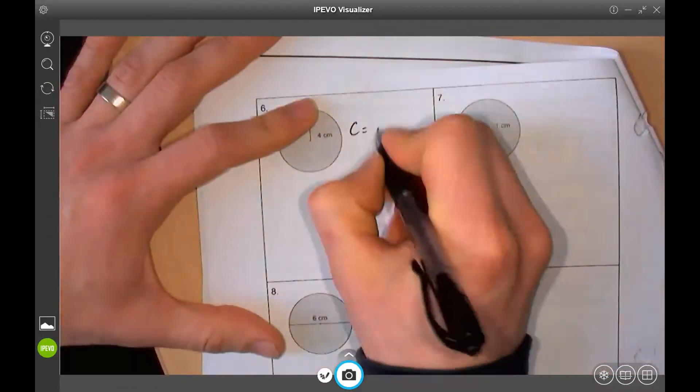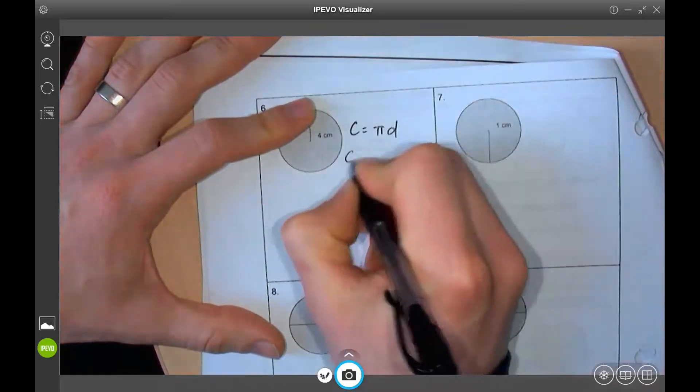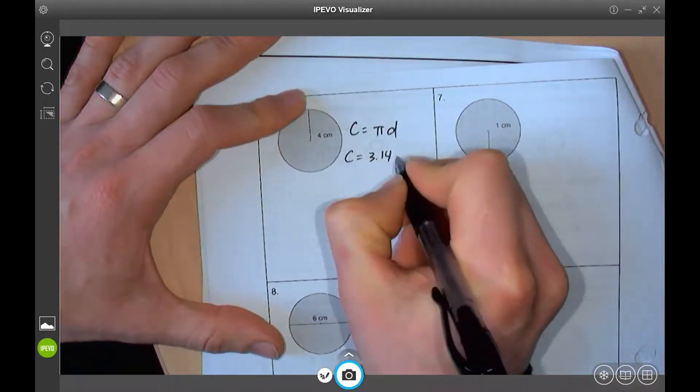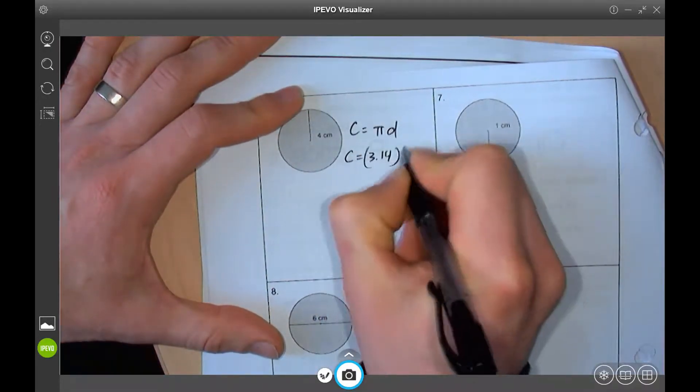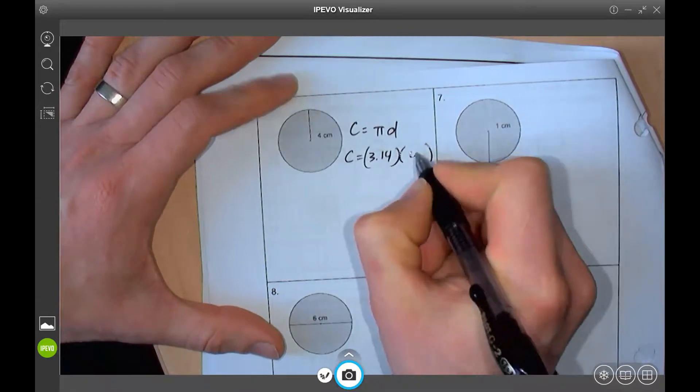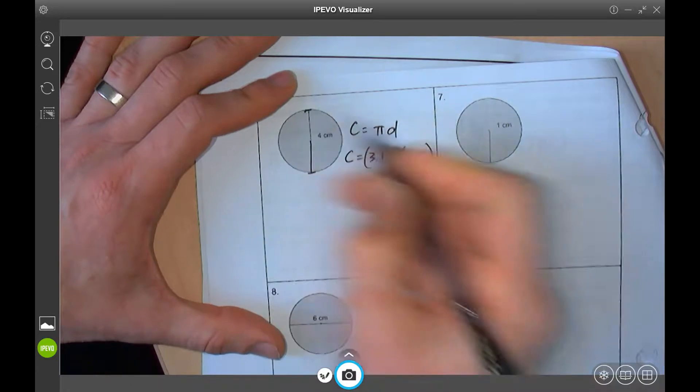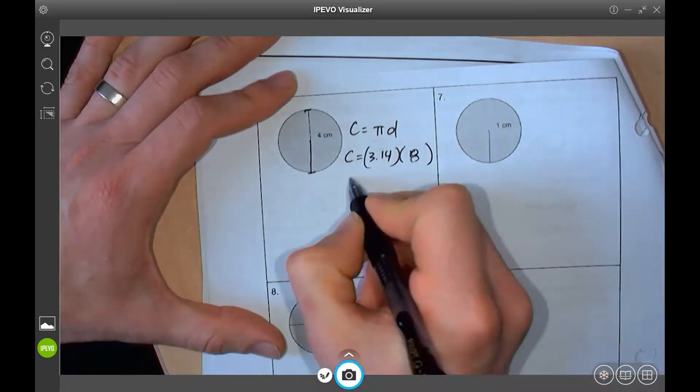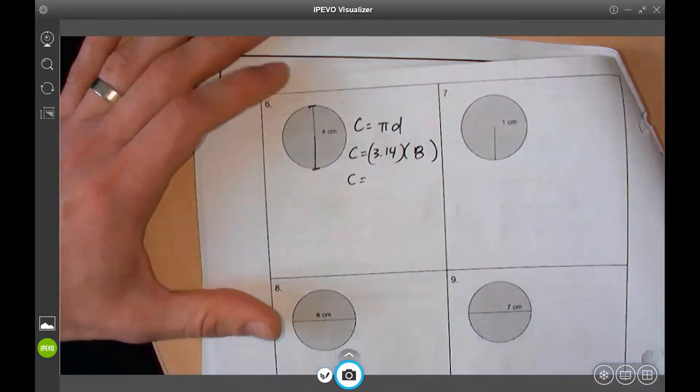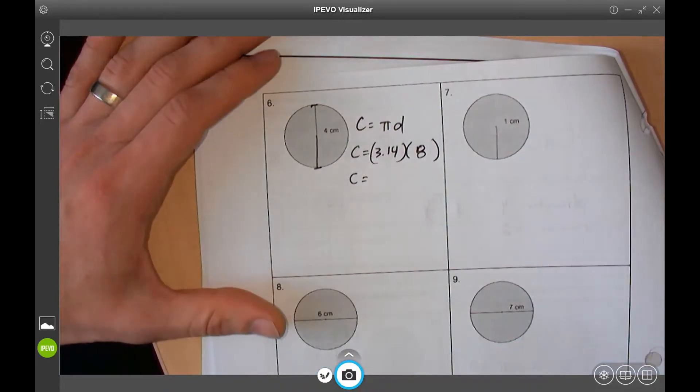Circumference is pi D. Circumference equals 3.14 times. Another way to write times is with brackets. Nope, it's not 4. D is all the way across. Should be 8. And that is how to do those questions.